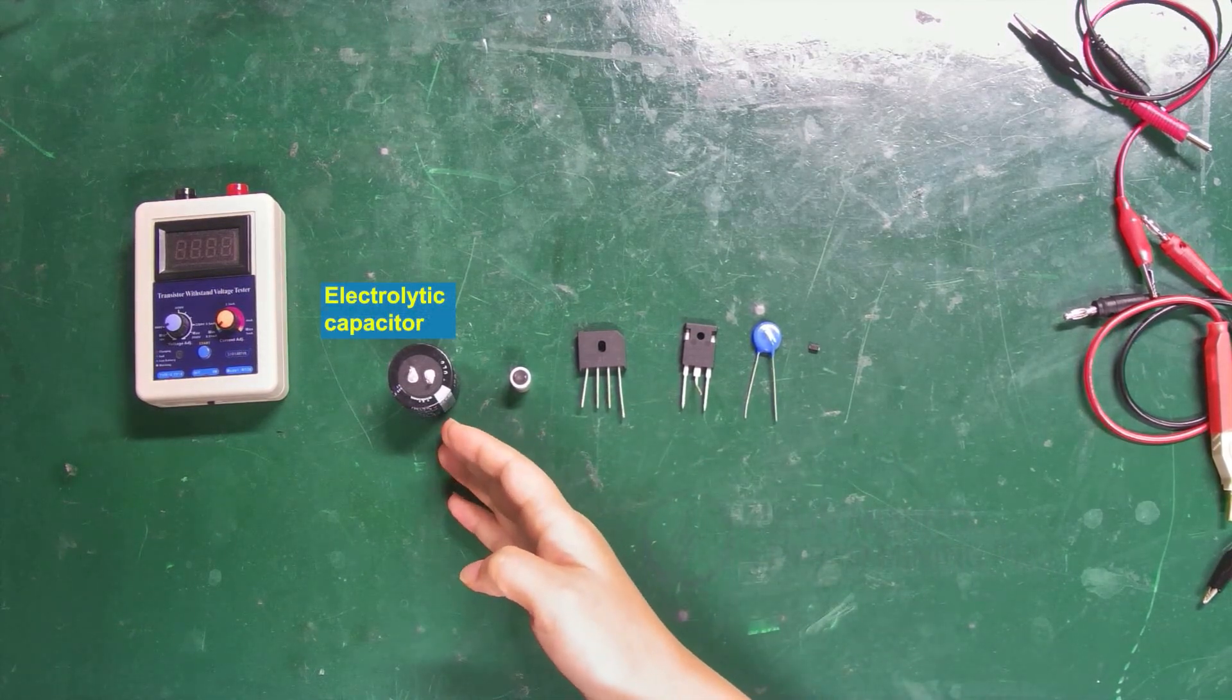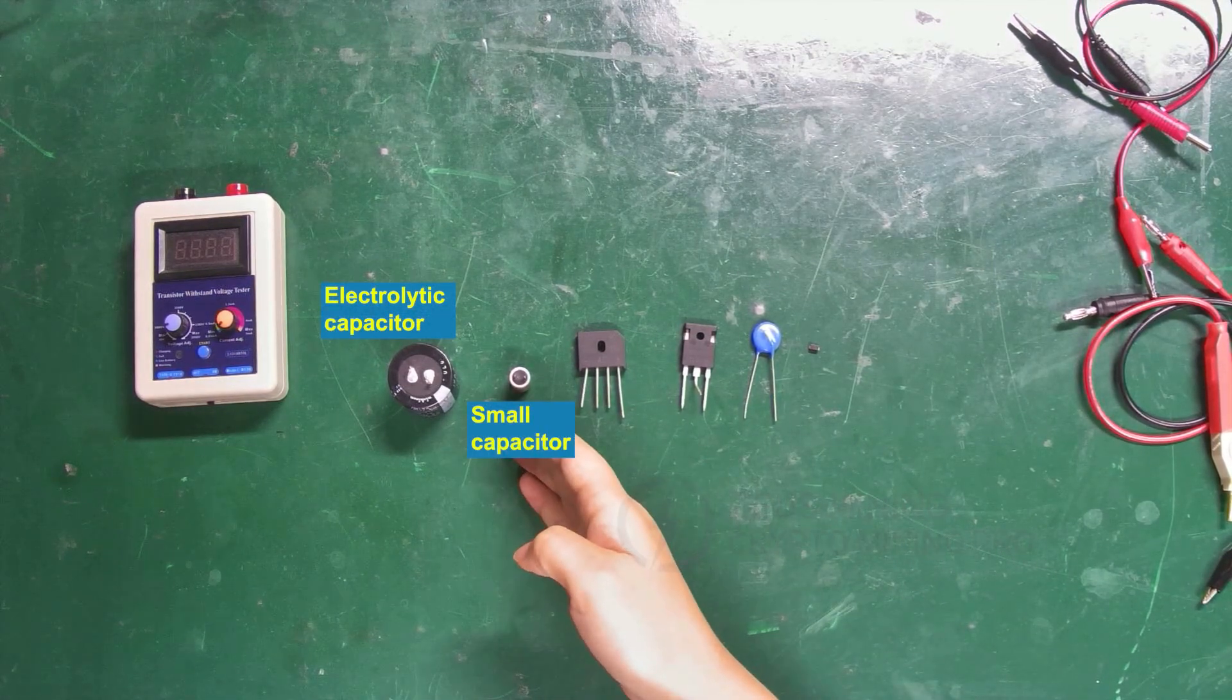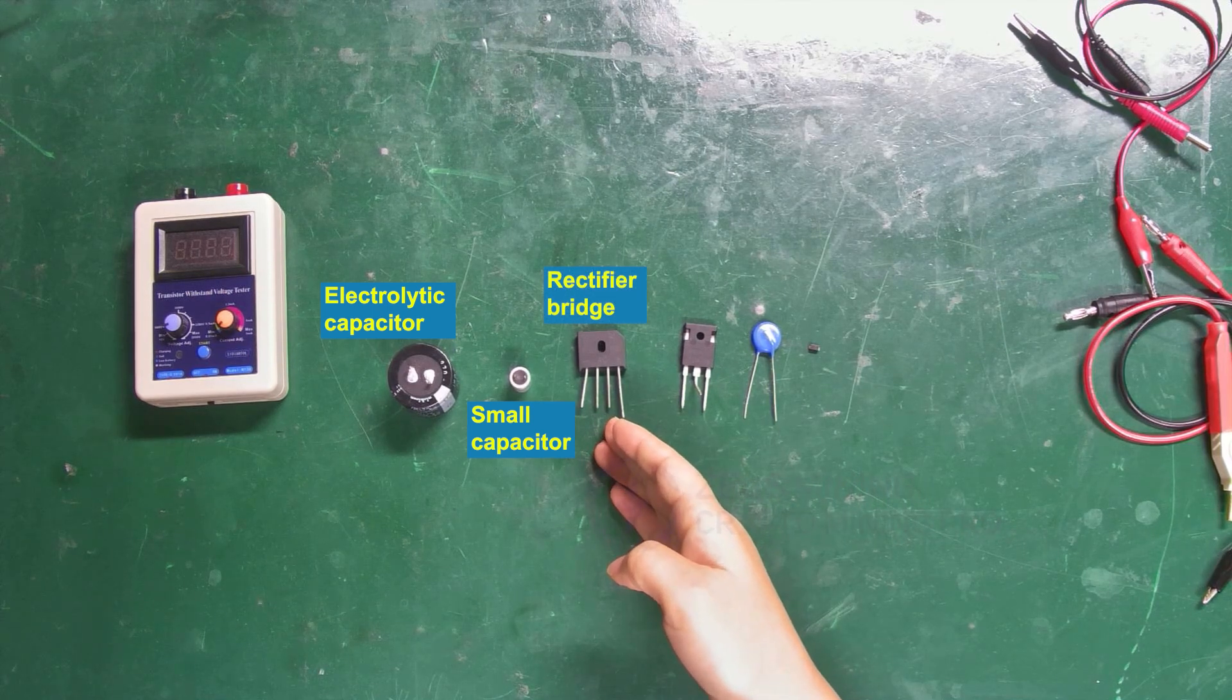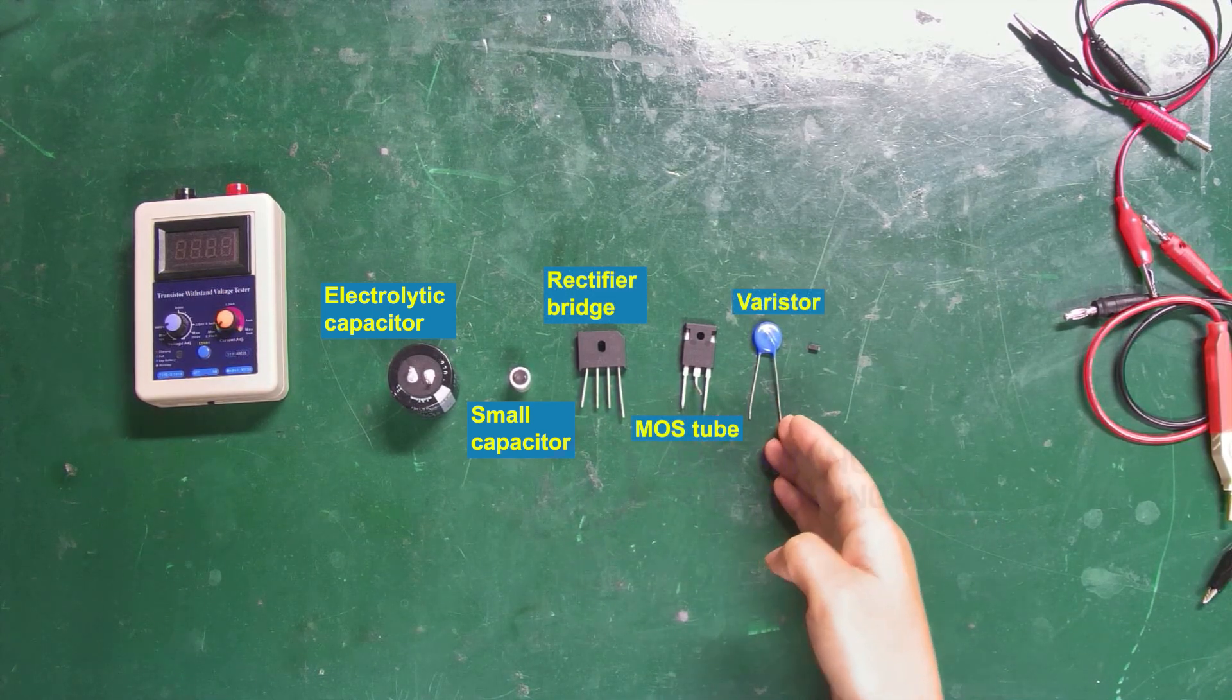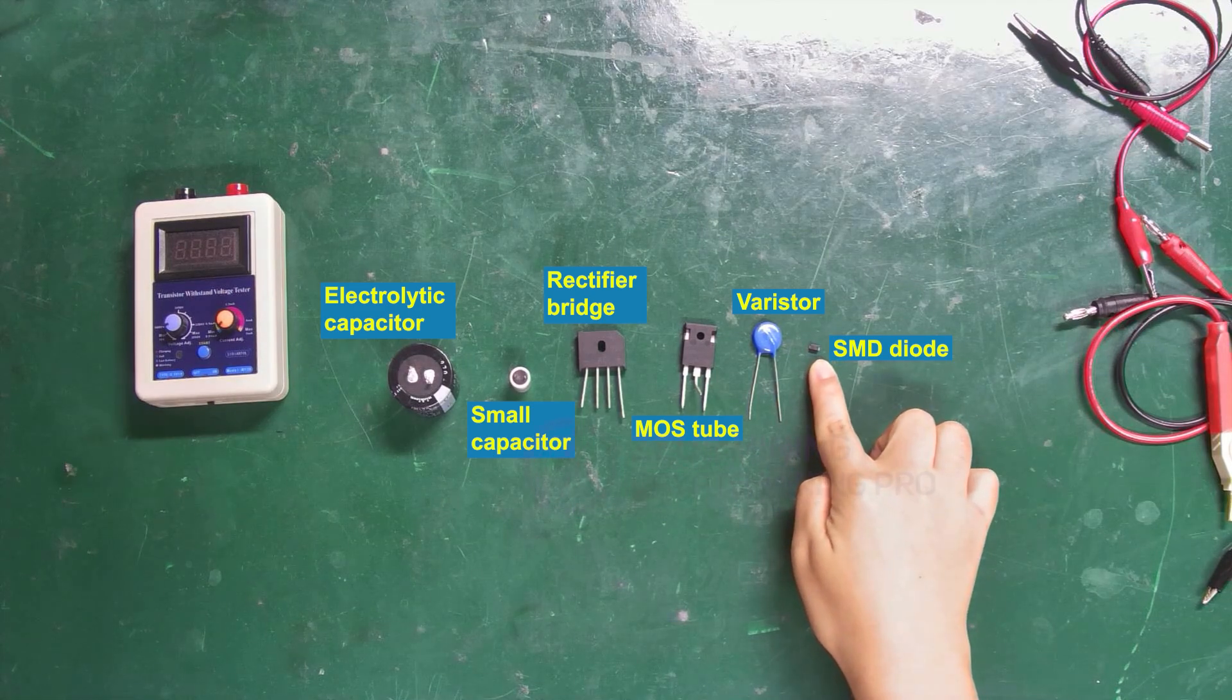Next, I will use these components as examples for demonstration. They are an electrolytic capacitor, a small capacitor, a rectifier bridge, a MOS tube, a varistor, and an SMD diode.